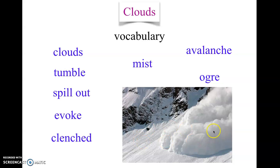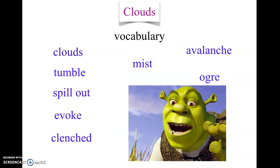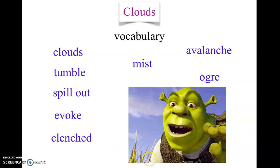Here you can see the snow. This is an avalanche — when a lot of snow falls down the side of a mountain. If you've seen this movie, this character's name is Shrek. He is an ogre. So this word is useful for this poem, and it's useful for this movie.